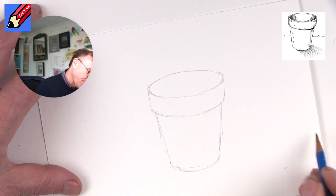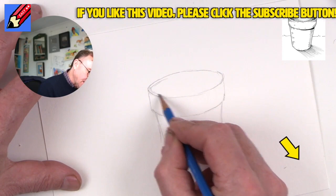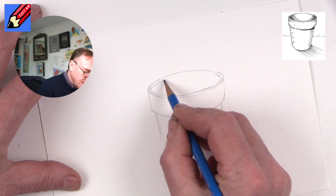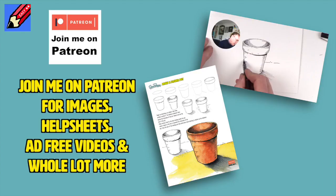Now in here what we need to do is to draw another ellipse just inside it. Draw this very very gently because we're going to erase this later, and if you press too hard you're going to have difficulties. Why not join me on Patreon for images, help sheets, advice and a whole lot more.